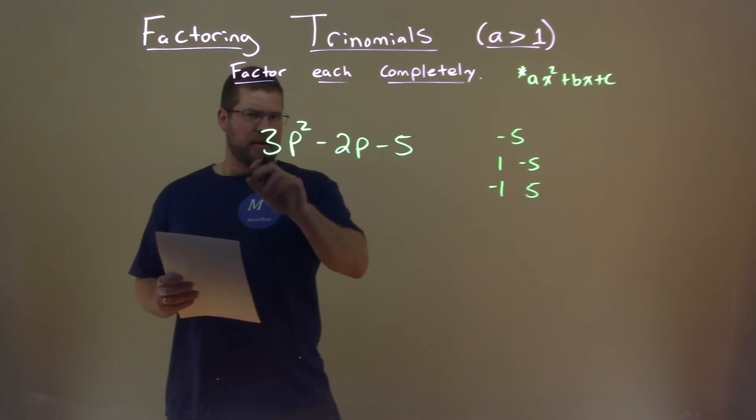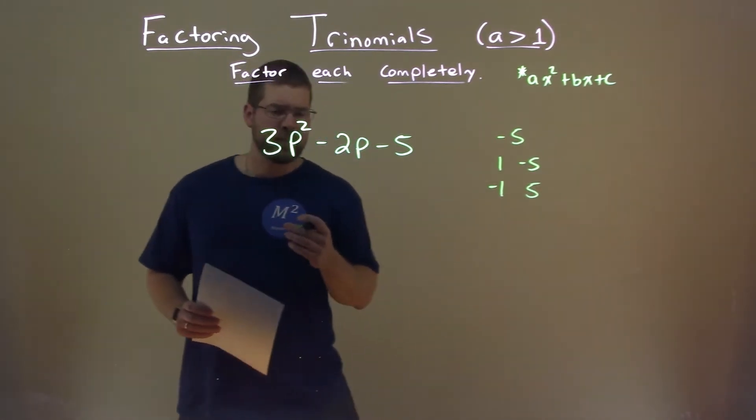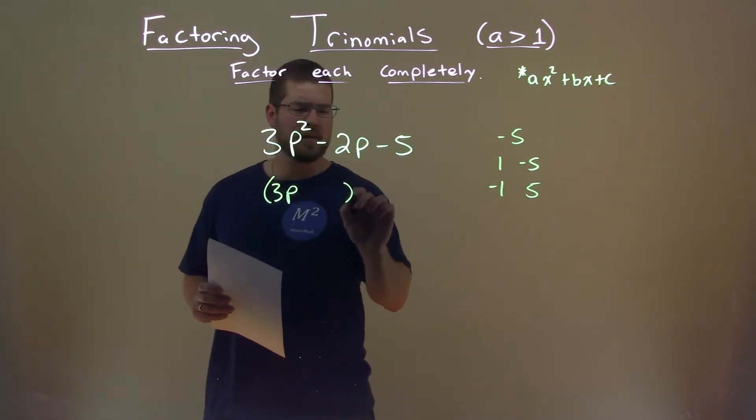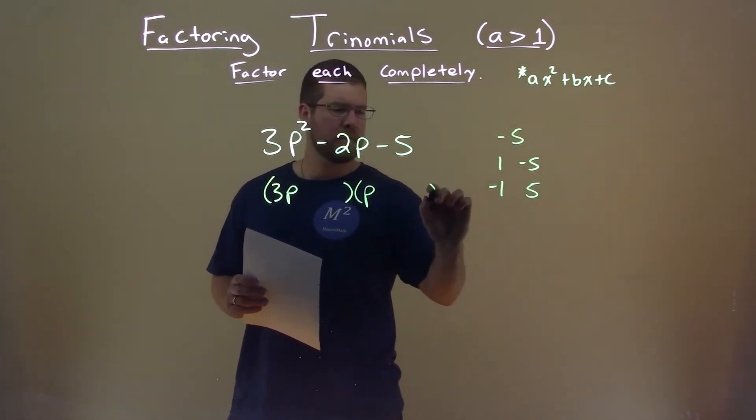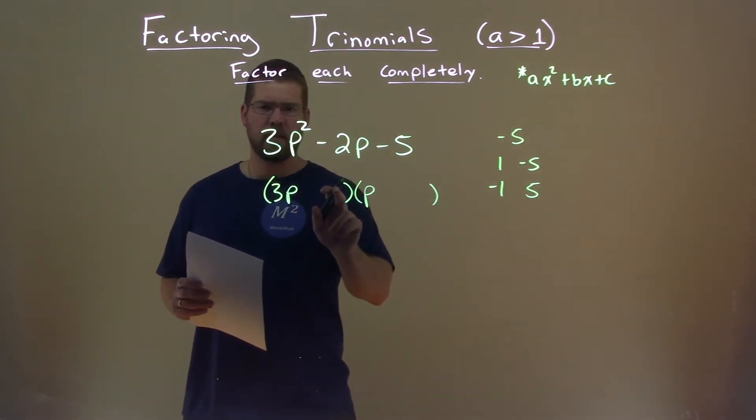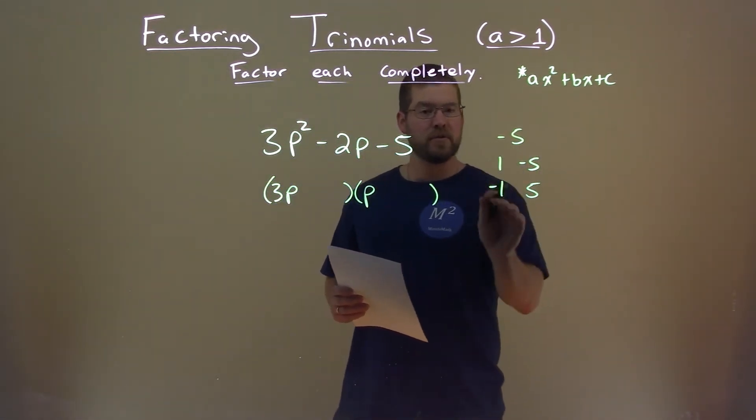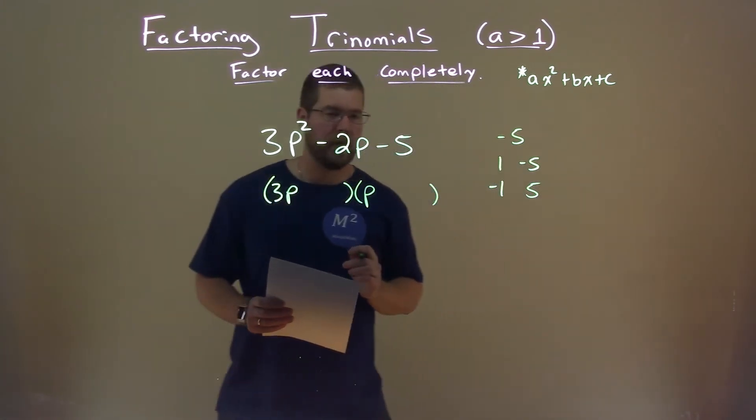When I see the a value here now being 3, it's a prime number. I know I have to have it in this form: 3p times some p. And there's going to be a plus or minus some number here and plus or minus some number here, and that's going to be some combination of the two numbers that multiply to be my c value, negative 5.